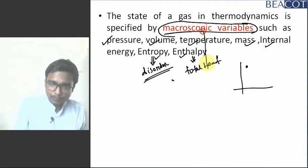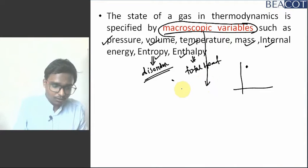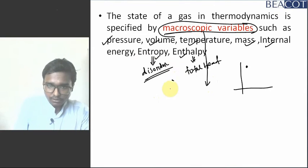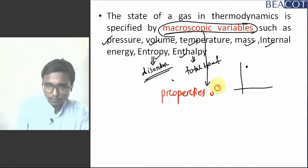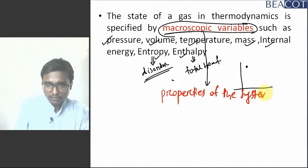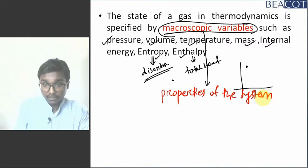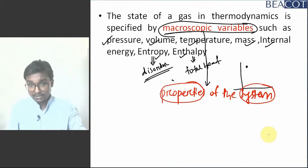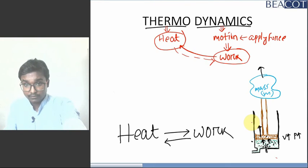These macroscopic variables are called properties of the system. Two words came here: properties and system. What is system? In thermodynamics — in this picture — if I consider this cylinder and piston as my system, system means a quantity of matter where our focus or attention is focused.